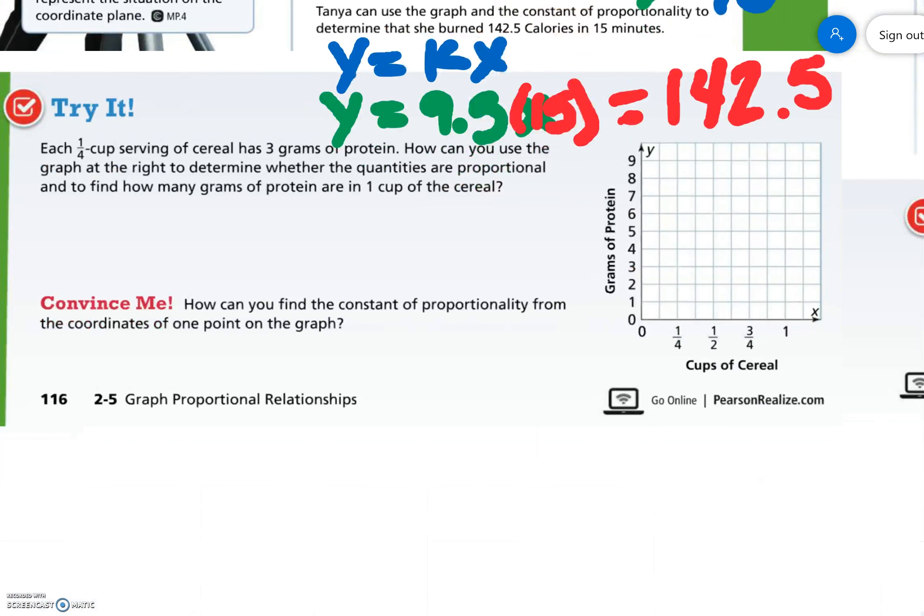Let's try it. Each fourth cup of serving of cereal has three grams of protein. How can you use the graph at the right to determine whether the quantities are proportional and to find how many grams of protein are in one cup? Well, if we go at one-fourth, that's three grams of protein.